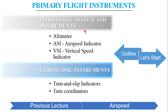Under pitot static system and instruments we will be seeing the altimeter, airspeed, and vertical speed indicators. Under gyroscopic instruments we will be seeing the turn and slip indicator, and further we will be proceeding to the turn coordinators.